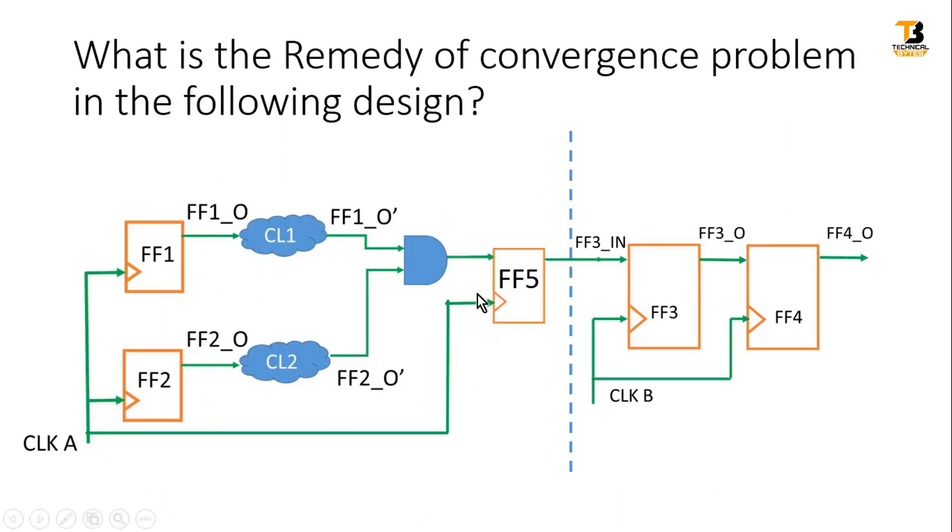Friends, to avoid the convergence problem at the boundary of this clock domain crossing, we have to put this flip flop at the output of this convergent logic. All the glitches generated at the output of this AND gate will be filtered by this flip flop 5.